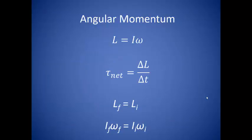Angular momentum is analogous to linear momentum. To find angular momentum, we use the moment of inertia times the angular velocity. Any change in angular momentum is due to a net torque acting on the system. If the net torque acting on the system is zero, then the final angular momentum is equal to the initial angular momentum.